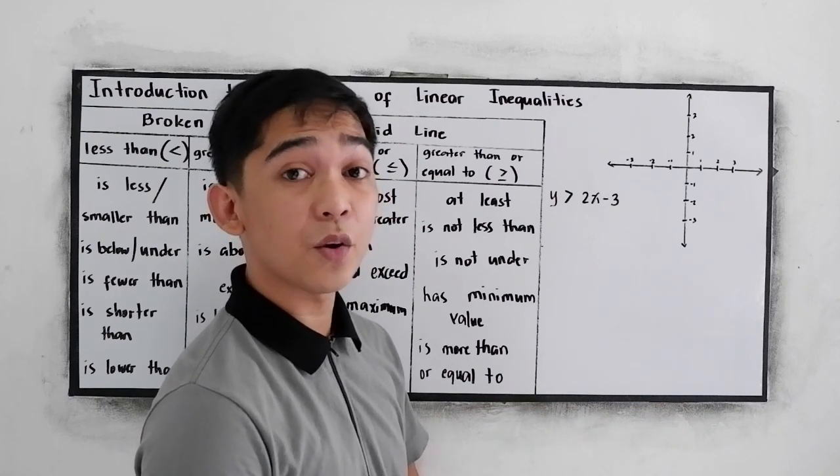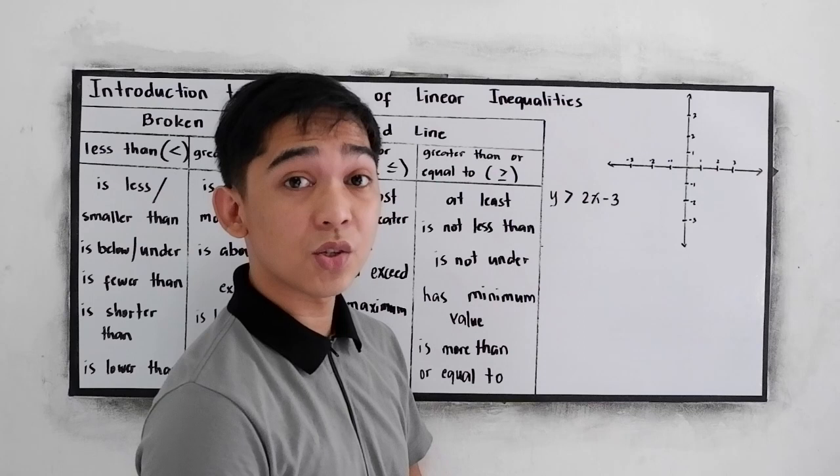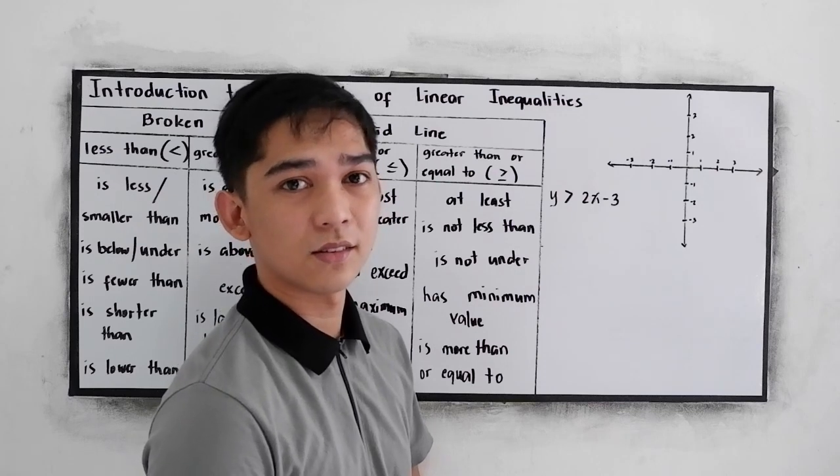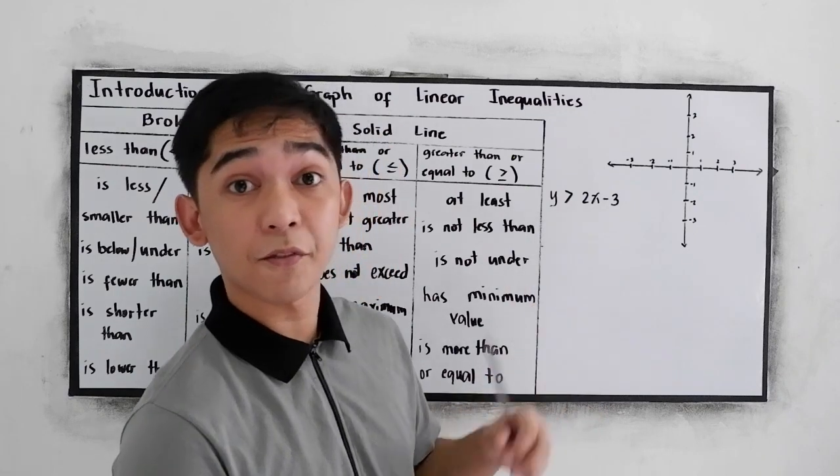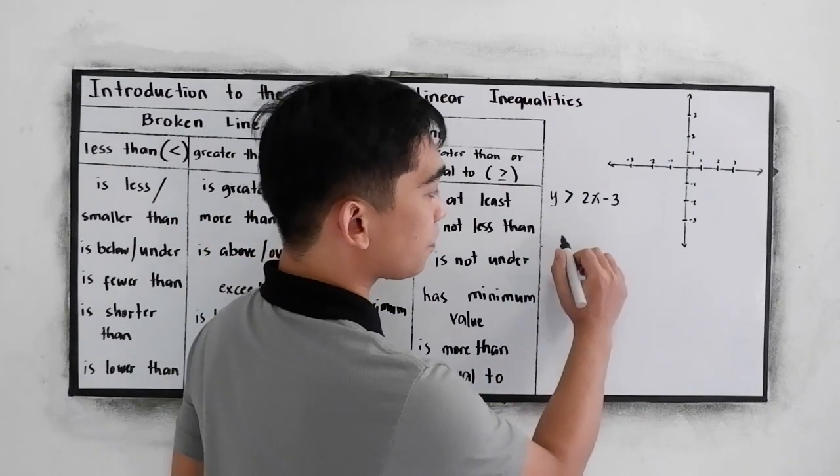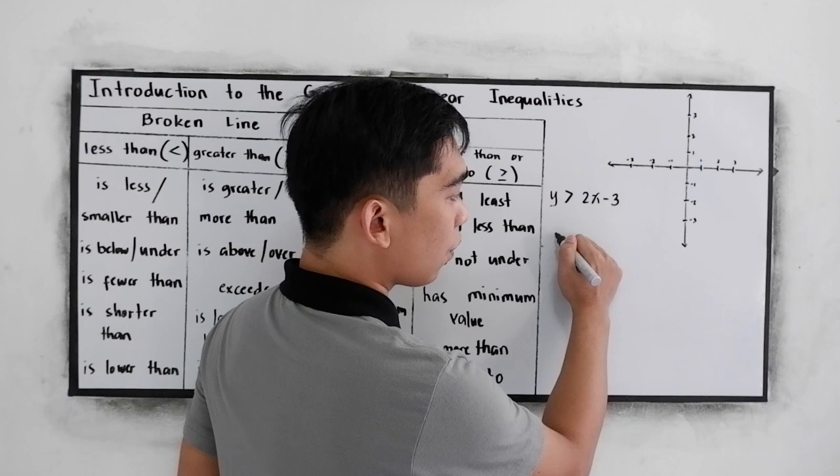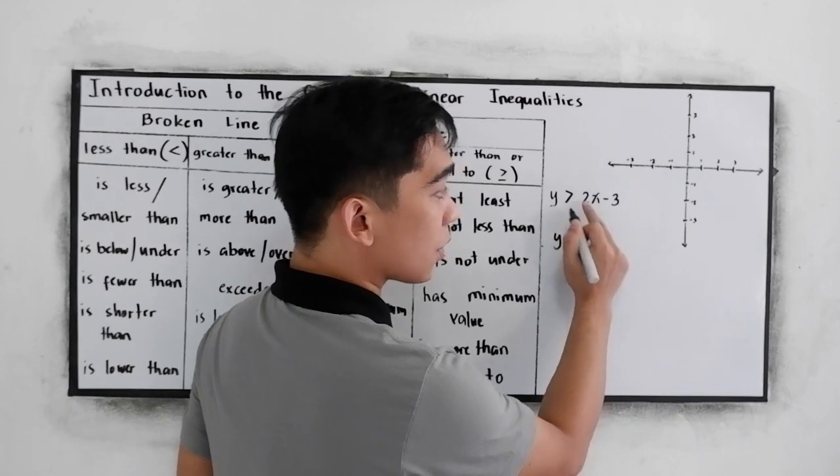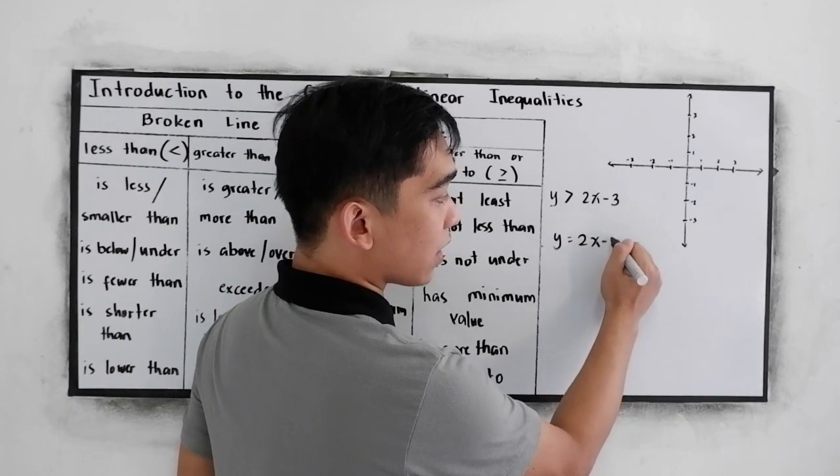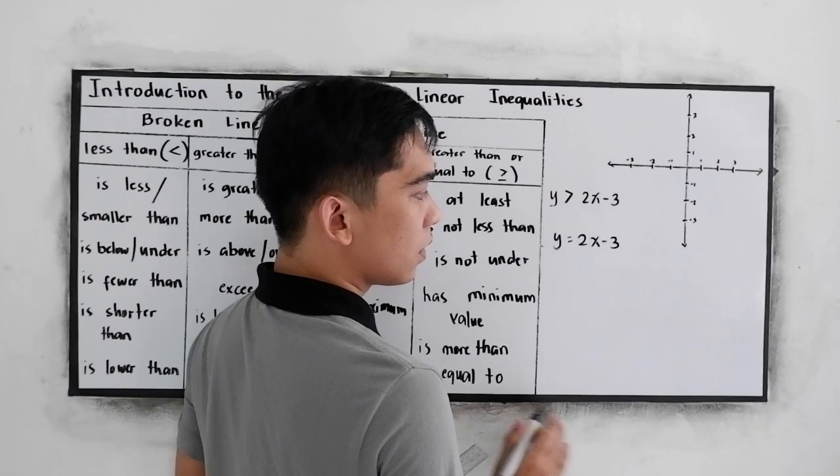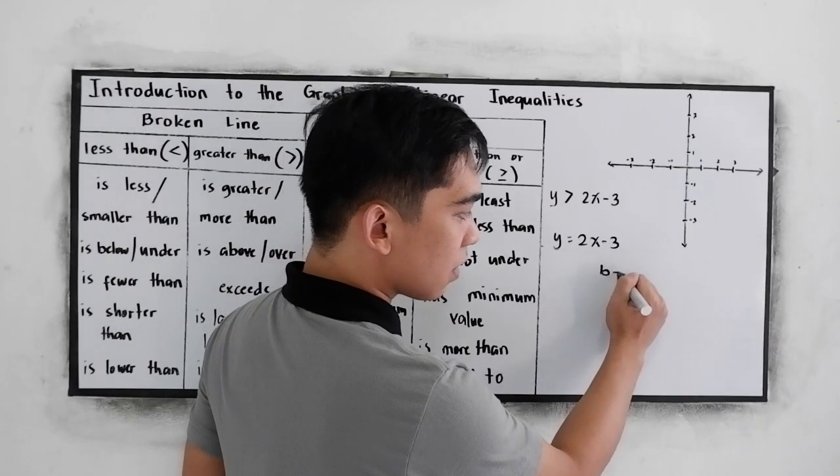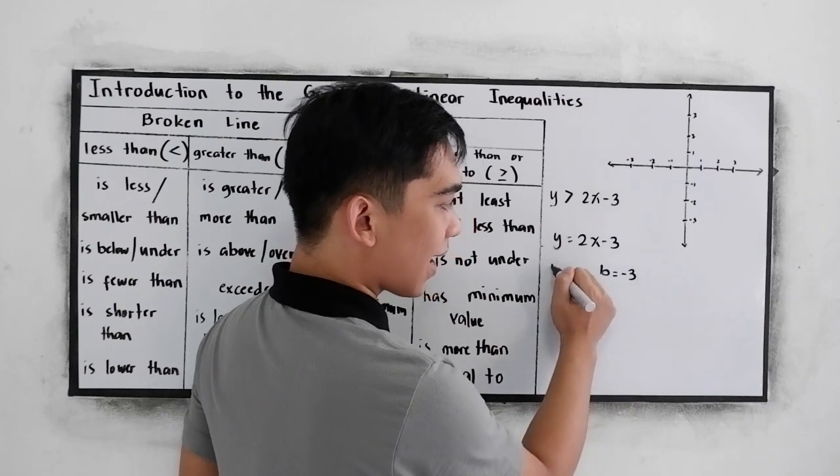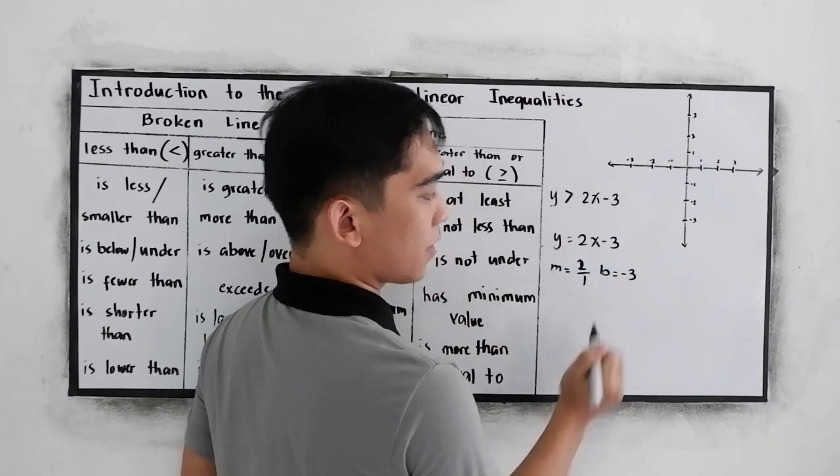In linear equation, we can graph this using the rise over run. Or simply, it is written in the slope-intercept form. We can write as y is equal to 2x minus 3. So, this is our B, negative 3, and M, 2 over 1.